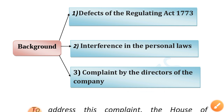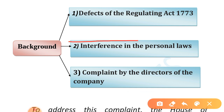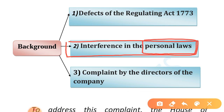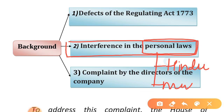The next point is interference in personal laws. There was interference in the personal laws of the communities, which unsettled the people. All communities had their own customs — for example, Hindus and Muslims. At that time, English law was being applied here, and it was interfering in the customs and laws of Hindus and Muslims.